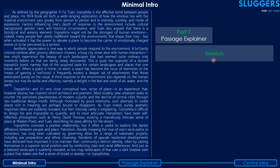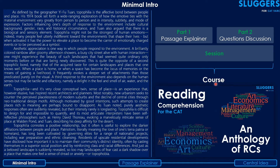I've titled the RC as 'Topophilia: A Bond Between People and Place' — 507 words, five questions, quite standard as per CAT. The session is split into two parts: Part One is the passage explainer, where I take you through each paragraph using a schematic diagram, and Part Two covers the questions. This video is Part One. Forty such sessions make up the course titled 'An Anthology of RCs' for CAT reading comprehension preparation.